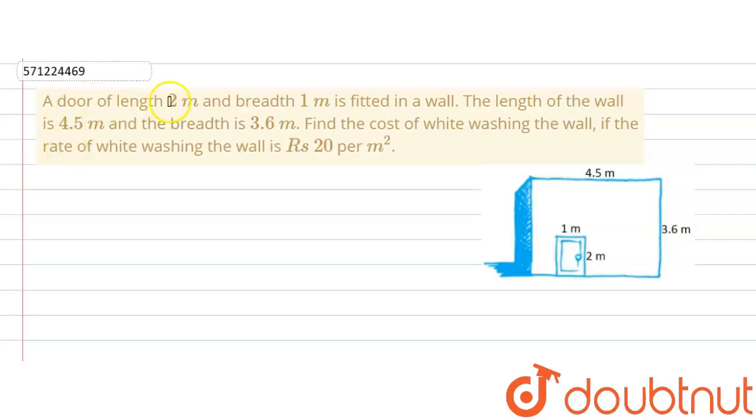The given question says that a door of length 2 meter and breadth 1 meter is fitted in a wall. So there is a wall something like this, and there is a door of length 2 meter and breadth 1 meter which is fitted in the wall.